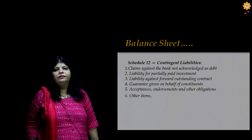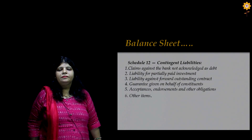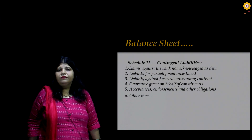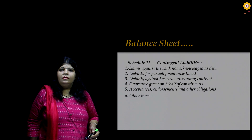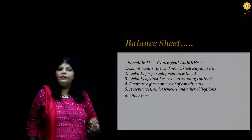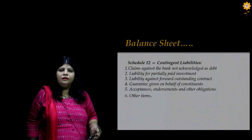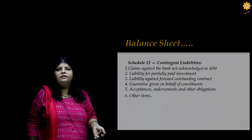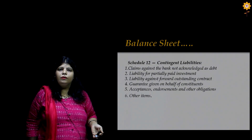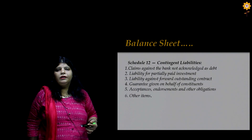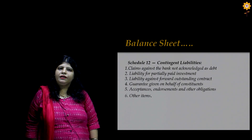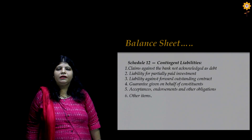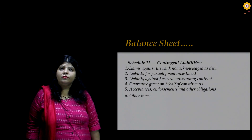Moving to the last schedule, Schedule 12 covers contingent liabilities. A contingent liability may or may not be a liability depending upon events happening in the future. For a bank, the major contingent liabilities are acceptances, endorsements, guarantees given on behalf of constituents, and liability on behalf of partly paid investments. Contingent liability is recorded after the balance sheet — it does not form part of the balance sheet. In this video tutorial, we have studied the balance sheet, and in the next video tutorial, we will look at the P&L account and other key concepts. Hope you understood. Thank you.